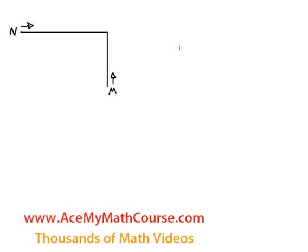And here we have another related rates question. Car M is driving north at 30 miles an hour, and car N is driving east at 40 miles an hour. Both cars are driving towards the intersection of the two roads.